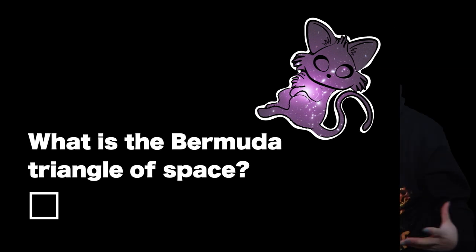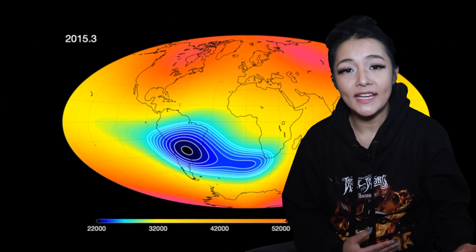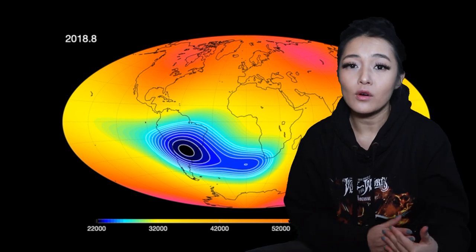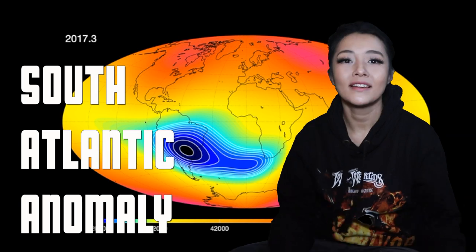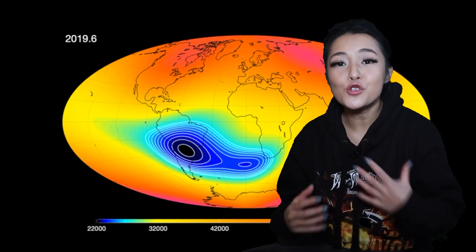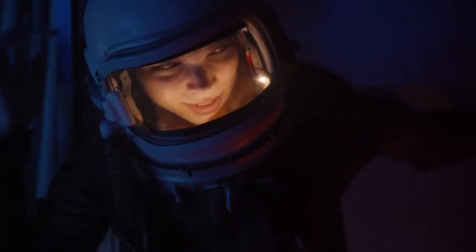Above the South Atlantic Ocean between Chile and Zimbabwe is the Bermuda Triangle of space, also known as the South Atlantic Anomaly. This region of space is notorious for wreaking havoc on the spacecraft that enter it.